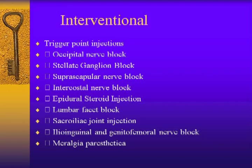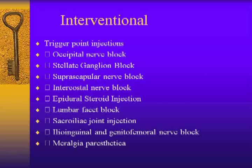Some of the interventional approaches we could use include trigger points, which are simple to do at bedside or at a home visit. Even an occipital nerve block can be done very easily at bedside. However, like the stellate ganglion block — should they have an RSD-type symptom — it's more appropriate to do under fluoroscopic approach. The suprascapular nerve block can be done under fluoroscopic view but can be done at bedside as well. Then there are epidurals, lumbar blocks, the genitofemoral or ilioinguinal nerve blocks, and meralgia paresthetica.